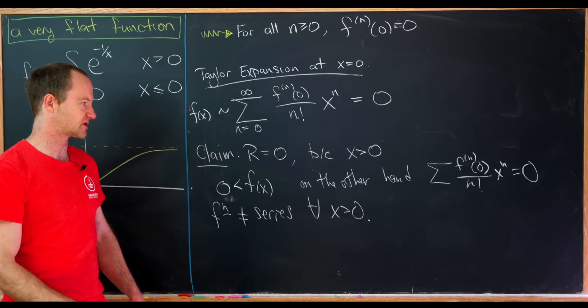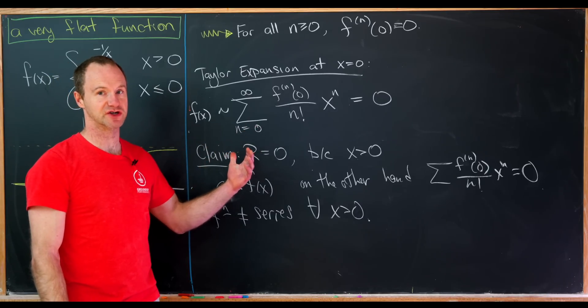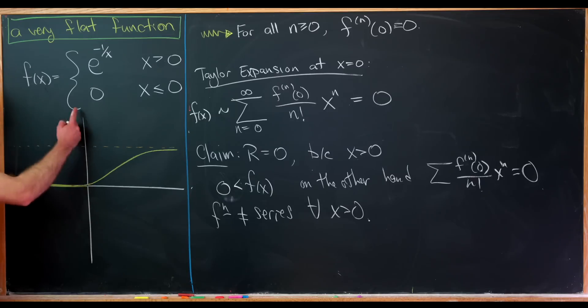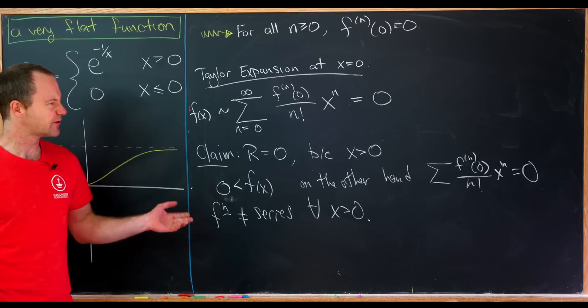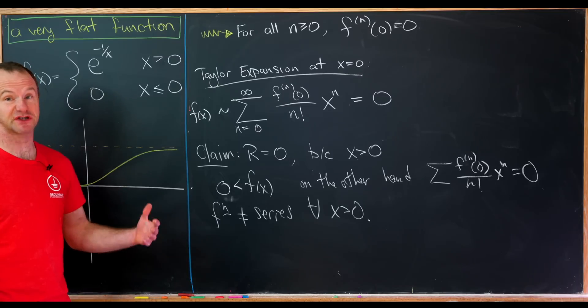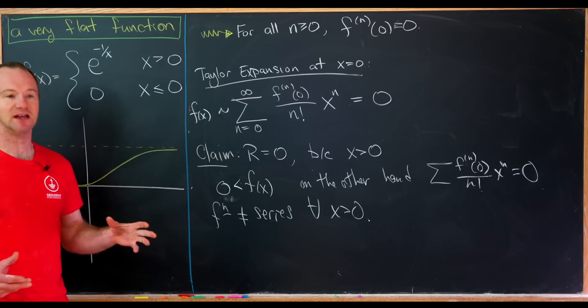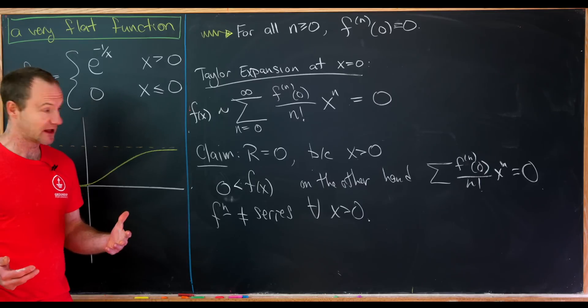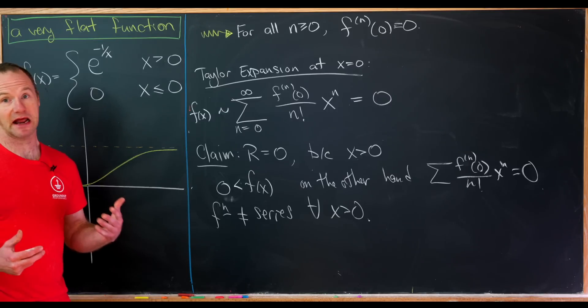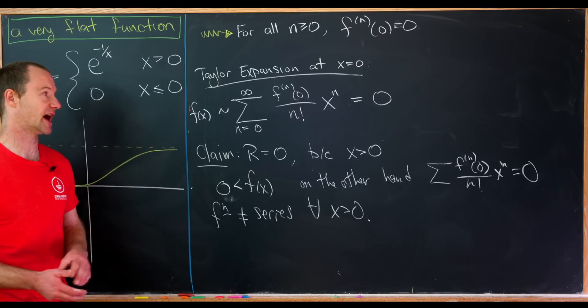So that means the power series, even though it always converges, it does not converge to the function if we are to the right of the y-axis. So that actually makes this function an example of something which is smooth, which means it's infinitely differentiable, but it is not analytic. Analytic means that it can be expanded as a power series at every point. But this cannot be expanded as a power series at 0.